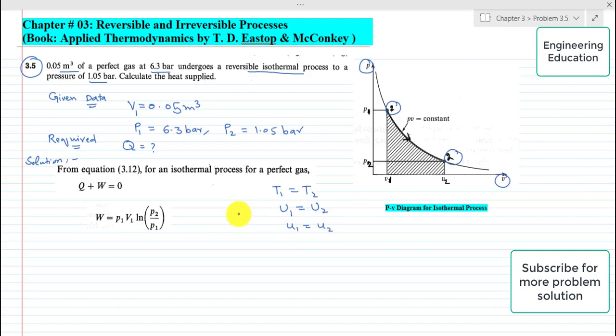So the non-flow equation will become Q + W = 0 because the difference in internal energy is 0. This is the isothermal process non-flow equation.